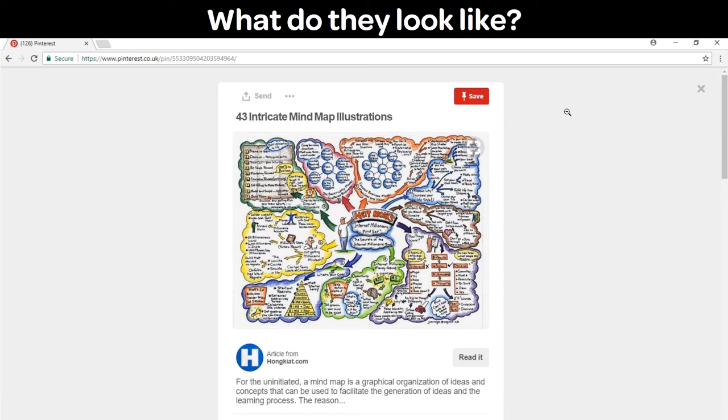Okay, so the one we stopped on here is not a classic example of a mind map but it does have many features which you would be looking for, which is a central idea, branching ideas and then within each branch there are subsequent branches, here shown by little arrows, each one pointing to topics and then subtopics and then sub subtopics. There's a little bit of text at the bottom which says, for the uninitiated a mind map is a graphical organization of ideas and concepts that can be used to facilitate the generation of ideas and the learning process.